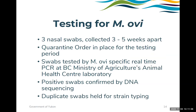Moving into testing — our protocol was established based on the concept that MOV is intermittently shed by carrier animals. We landed on three nasal swabs collected three to five weeks apart. This protocol provides hope to detect animals that are shedding the bacteria while being reasonably manageable for producers to comply with. During the testing period, we place a quarantine order to prevent movement of domestic sheep or goats in or out of the quarantine area. The quarantine order is also under the Animal Health Act, which allows us to offer compensation for costs incurred by the producer, such as labor spent mustering animals during a testing session.